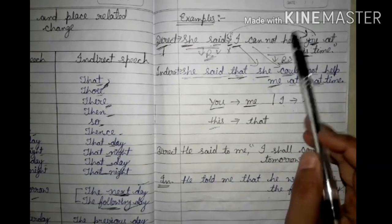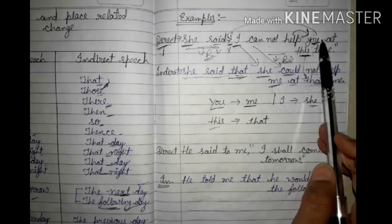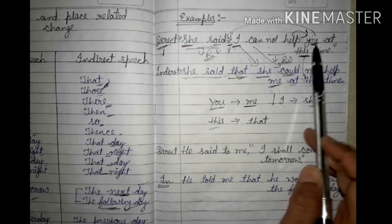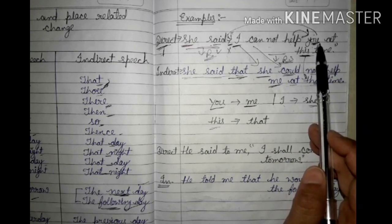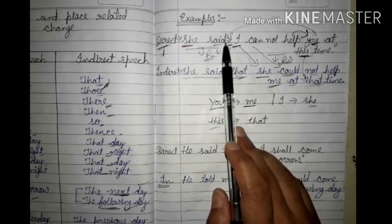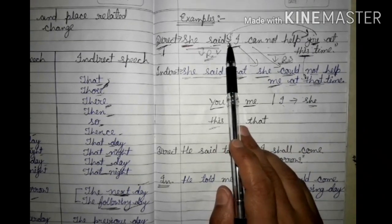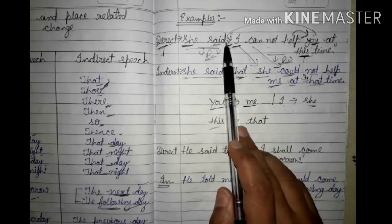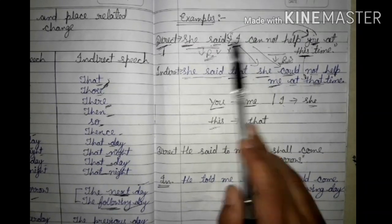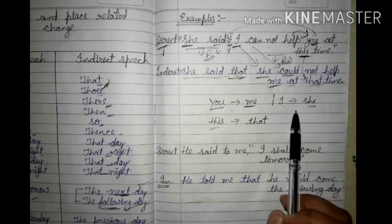'You' is the second person pronoun in the objective case. Since there is no object in the reporting verb, we assume it is first or third person objective case. So 'you' changes to 'me' as the objective case.